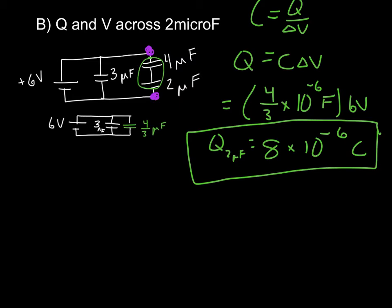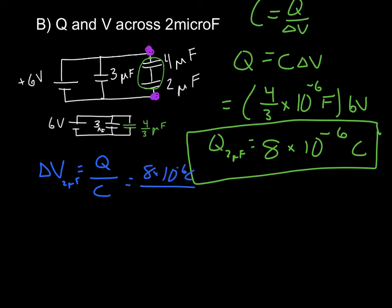For the next part, we find the voltage across the 2 μF capacitor. ΔV = Q/C. The charge flowing through the series branch is the same 8 × 10⁻⁶ coulombs we just calculated. The capacitance is 2 × 10⁻⁶ farads, so ΔV = 8/2 = 4 volts.